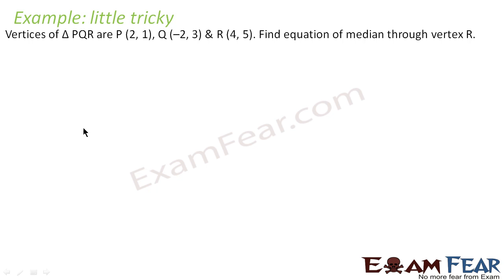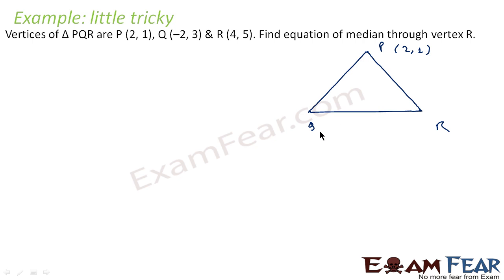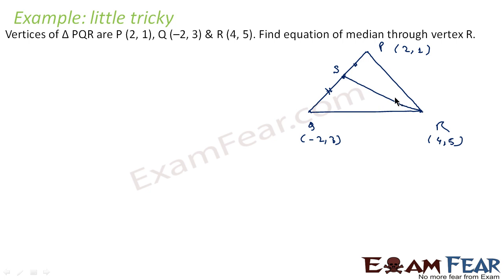Let's take an example — it's a little tricky. The vertices of triangle PQR are P(2,1), Q(minus 2, 3) and R(4,5). We have to find the equation of the median through vertex R. First, let's draw the triangle: P, Q and R. From R we draw a median to point S on side PQ such that QS equals PS. So we need to find the equation of line SR.